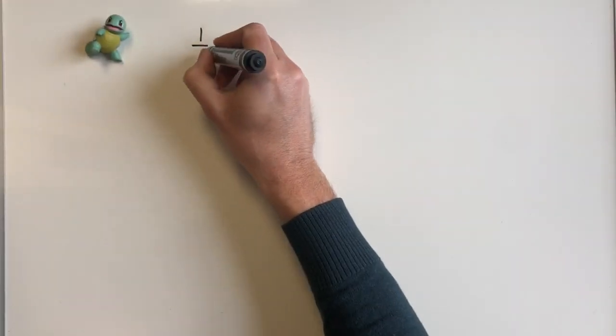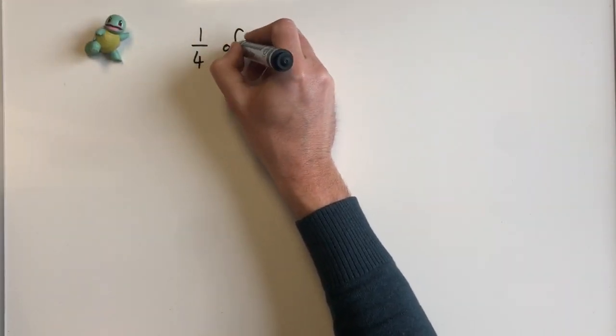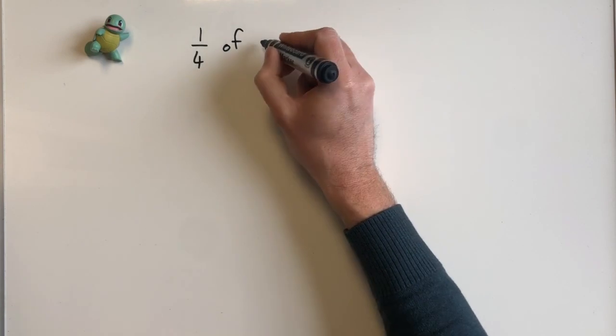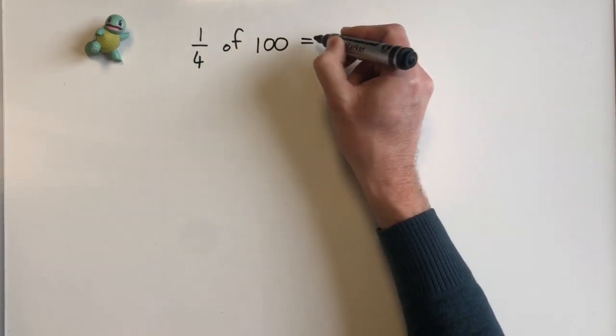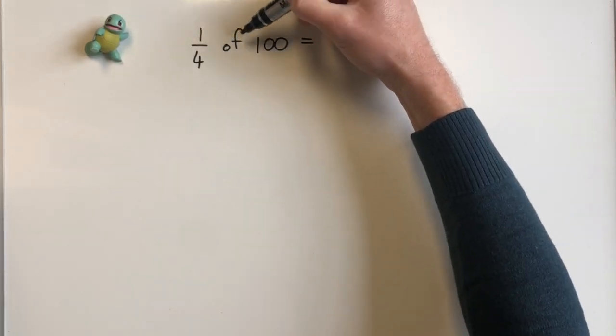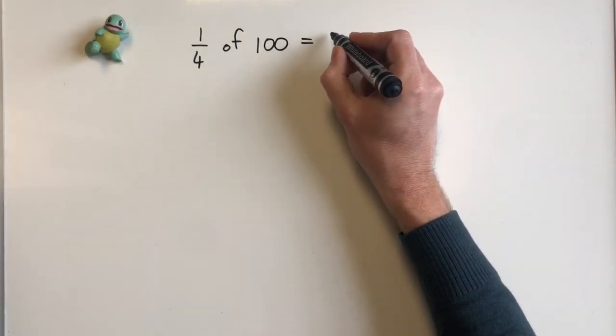Let's take a look at some other examples. We'll start off with another unit fraction, let's say a quarter of 100. 100 times 1 is obviously 100, and then divide that by 4, which gives us 25.